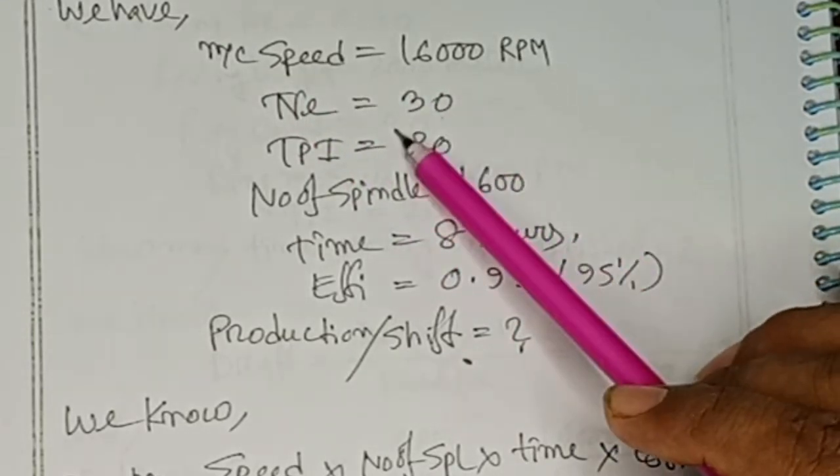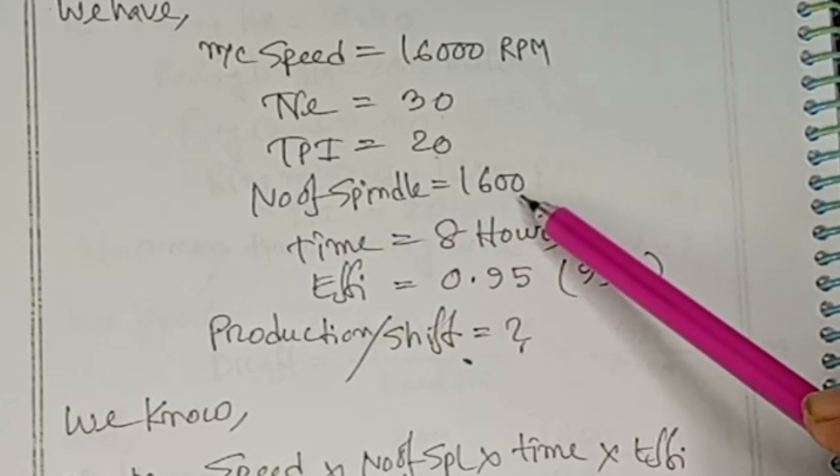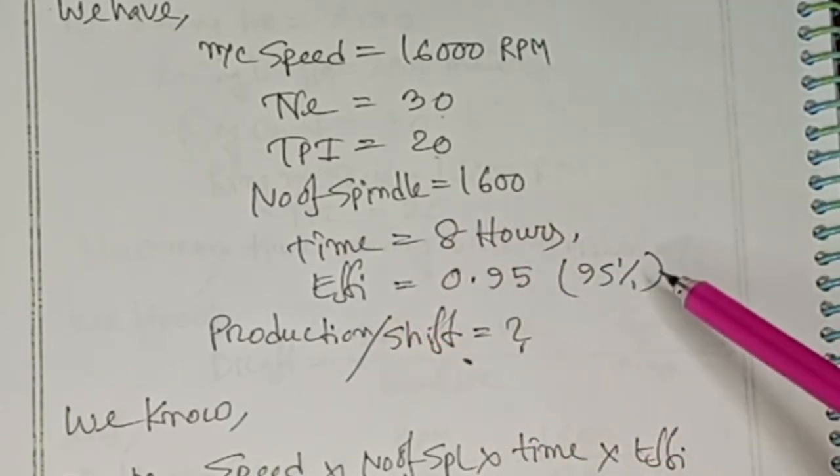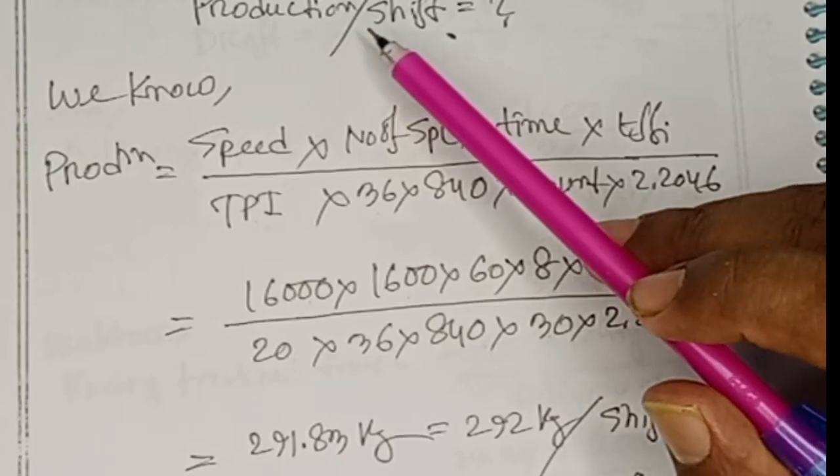16,000 RPM, number of count 30, TPI 20, number of spindles 1600, time 8 hours, efficiency 95%, and I